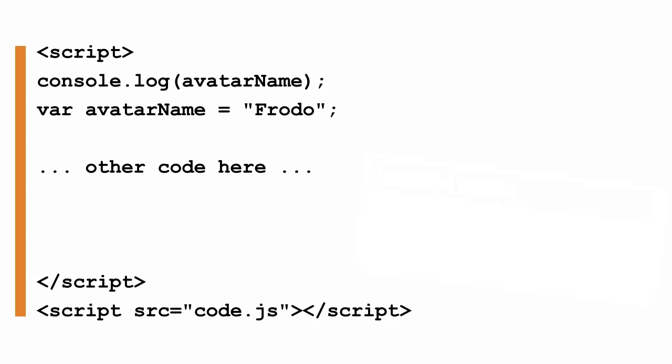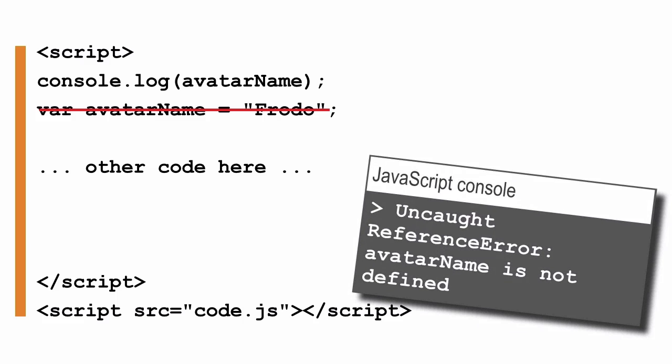Let's try one more thing. Now we'll get rid of the line of code where we're declaring and initializing the variable avatar name altogether. Will we still see the value undefined, or will we get an error? When we run the code this time, we get an error. And in Chrome, that error is: uncaught reference error — avatar name is not defined.